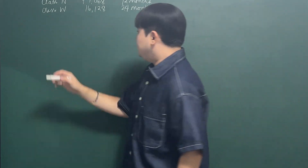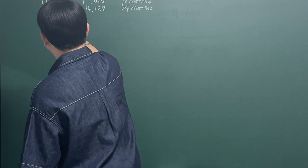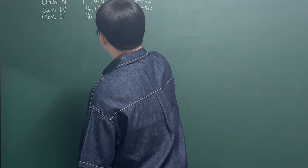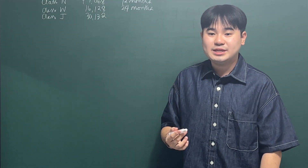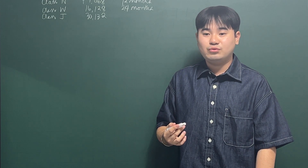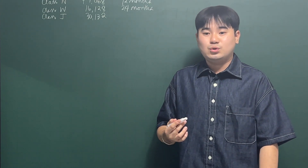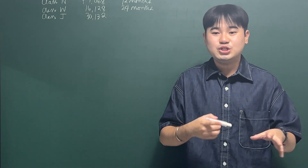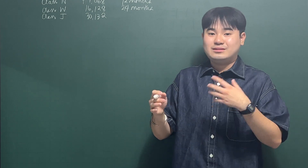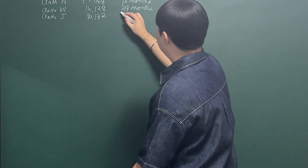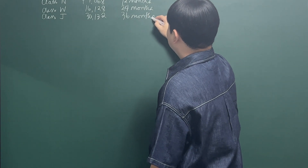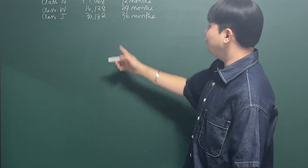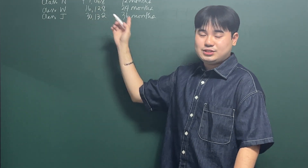The last one is Class J, which amounts to 30,132 pesos, running from December 1, 2023 to November 30, 2026. November 30's next day is December 1, so the duration is from 2023 to 2026 — three years, or 36 months. That's how you start analyzing the problem.